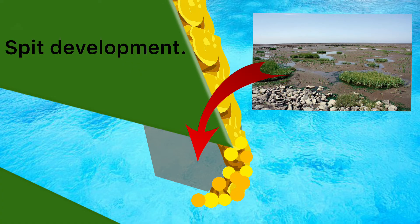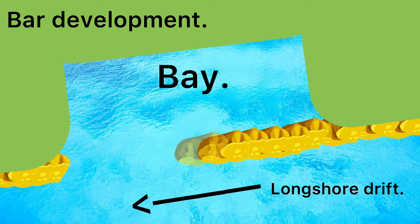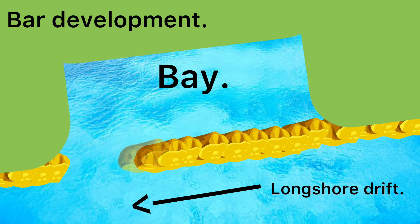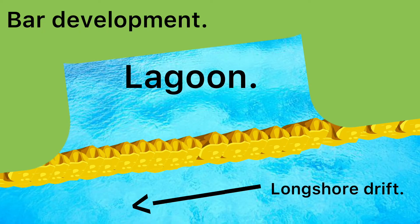Bars develop in the same way as spits, with longshore drift occurring where the land changes direction. But whereas the spit is only connected to the land at one end, a bar grows across a bay, connecting to the land at either side of the bay. This will seal the bay and create a lagoon, or lake, behind it.